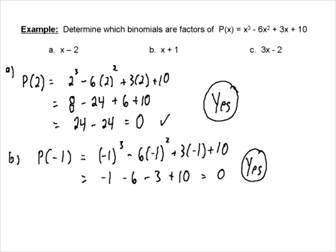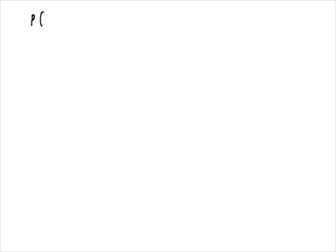Now let's look at this one: 3x minus 2. Remember, if we're trying to determine what the A value is, we want to set this equal to zero and solve for x. That tells us that our A value — what we're putting into our polynomial — is 2 over 3. So we want to do P(2/3), plugging 2/3 into the polynomial and trying to solve this.